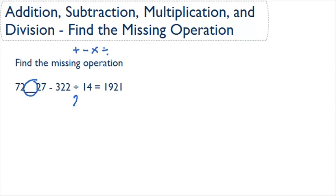This gives us an answer of 23. That means that 23 is going to be equal to 1,921. If we pull down the rest of our equation here, we'll have 72 blank 27 minus 23 equals 1,921.